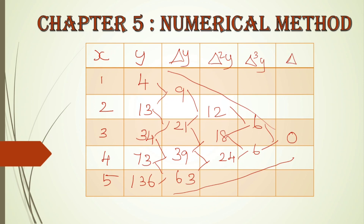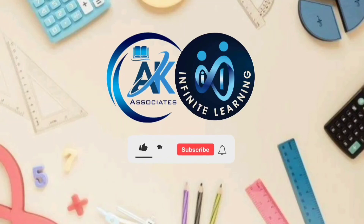For delta fourth y, there is just one value. The difference between 6 and 6 is 0. So our forward difference table is now complete. The forward difference table has been formed. That's it. Thank you, bye-bye.